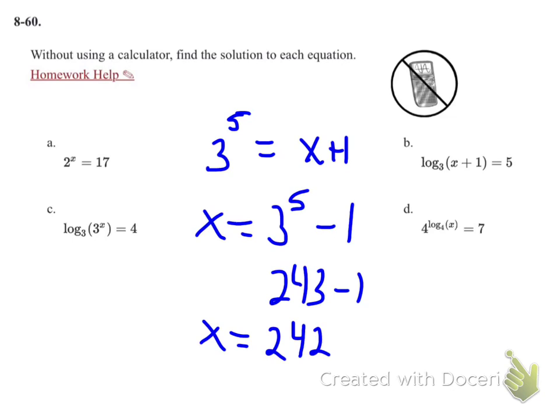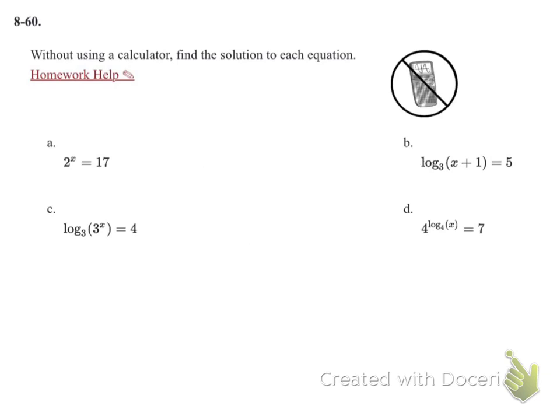Problem c: similar to what we did here, I'm going to write it as exponential form. Base of 3, exponent of 4, so I have 3 to the 4th equals 3 to the x. They have the same base, so 4 equals x.